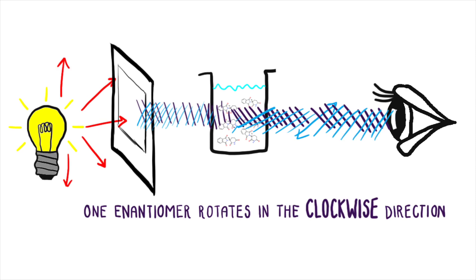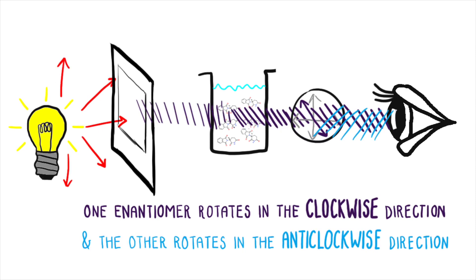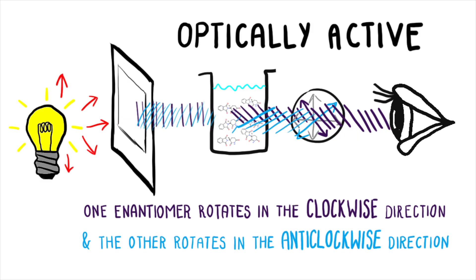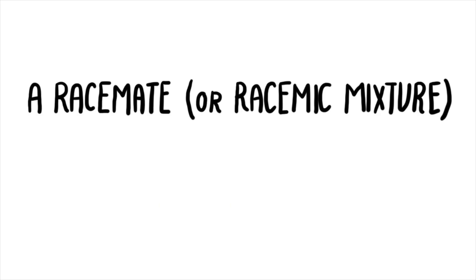One anatomer rotates in the clockwise direction, whereas the other rotates in the anticlockwise direction. Dextrorotatory anatomers rotate clockwise, whereas levorotatory rotate anticlockwise.